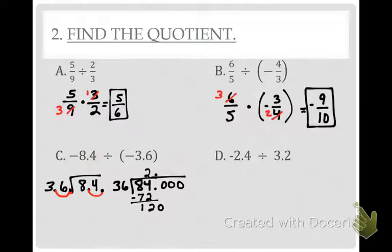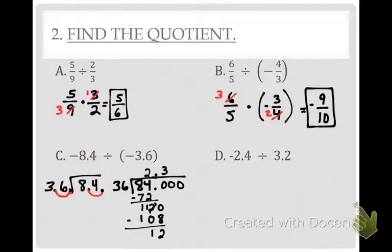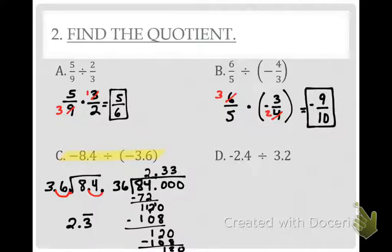Drop down a zero. Thinking of 36 as about 40 — count by 40s: 40, 80, 120 — so let's try 3. Three times 36 is 108, subtract to get 12. That's smaller than 36, so drop down another zero. 36 goes into 120 three times — 3 times 36 is 108, subtract to get 12 again. Do you see a pattern? The 3 is repeating. So the final answer is 2.3 repeating. Should my answer be positive or negative? Positive, because there were two negatives — an even number. The answer is 2.3 repeating.